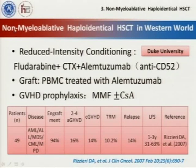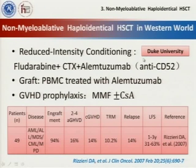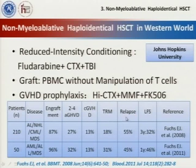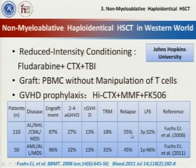There are also other protocols for haploidentical transplantation. Duke University used CAMPATH-52, an antibody approach for haploidentical transplantation; however, disease-free survival varied. Johns Hopkins University used another protocol with cyclophosphamide post-transplant and published their data. The incidence of GVHD was acceptable; however, many patients died of relapse, so disease-free survival was not really satisfactory.